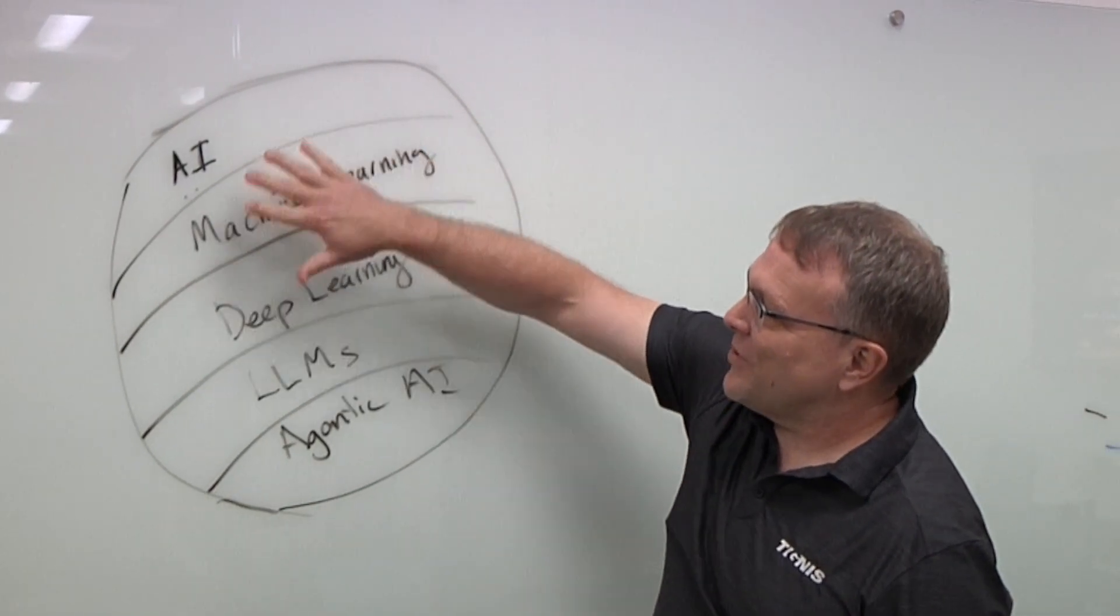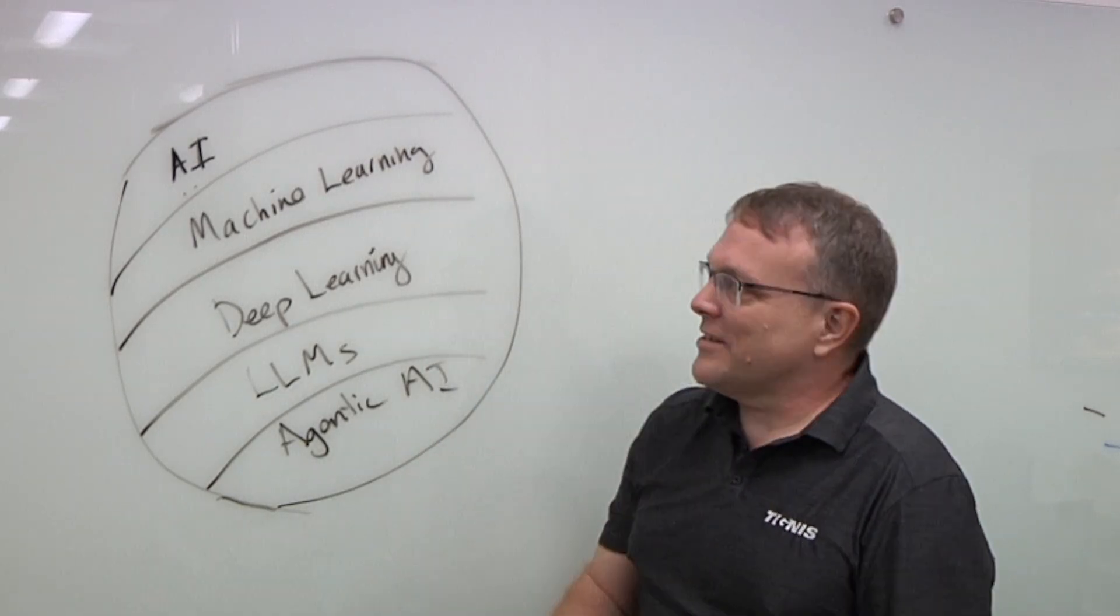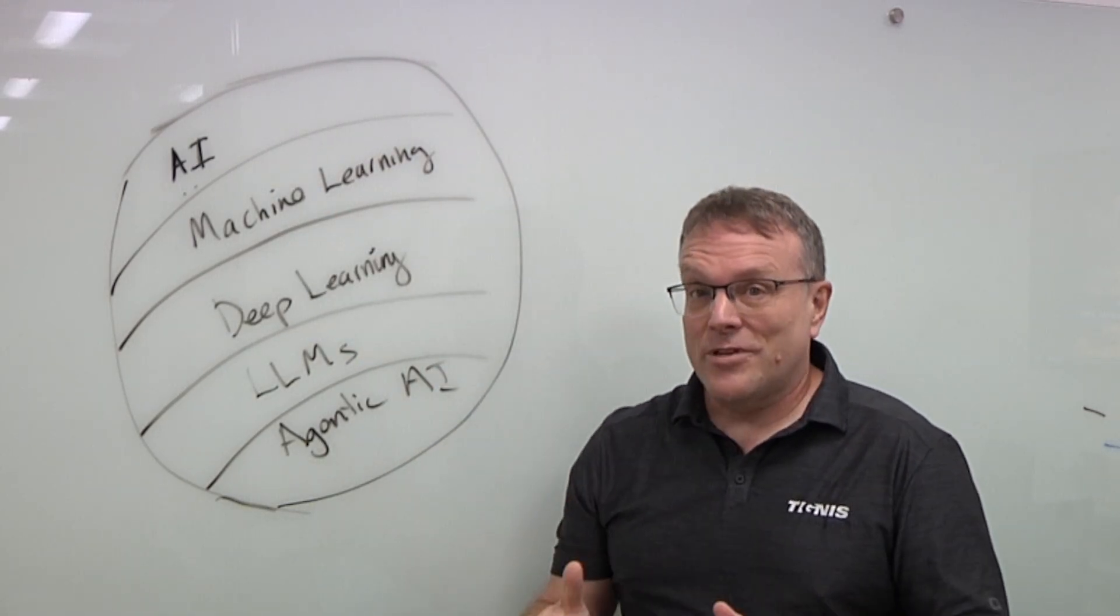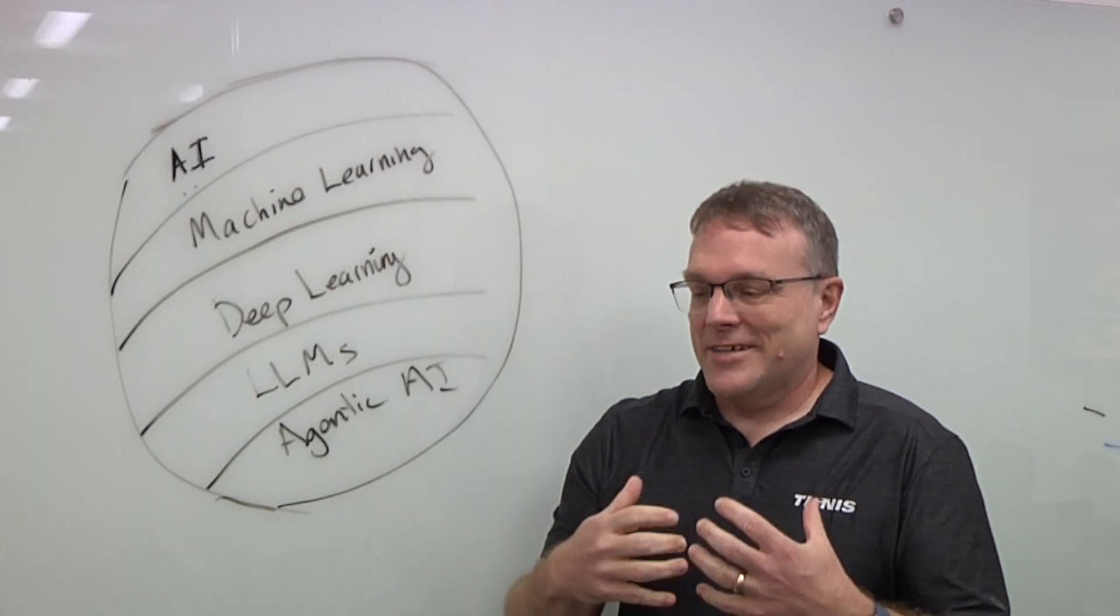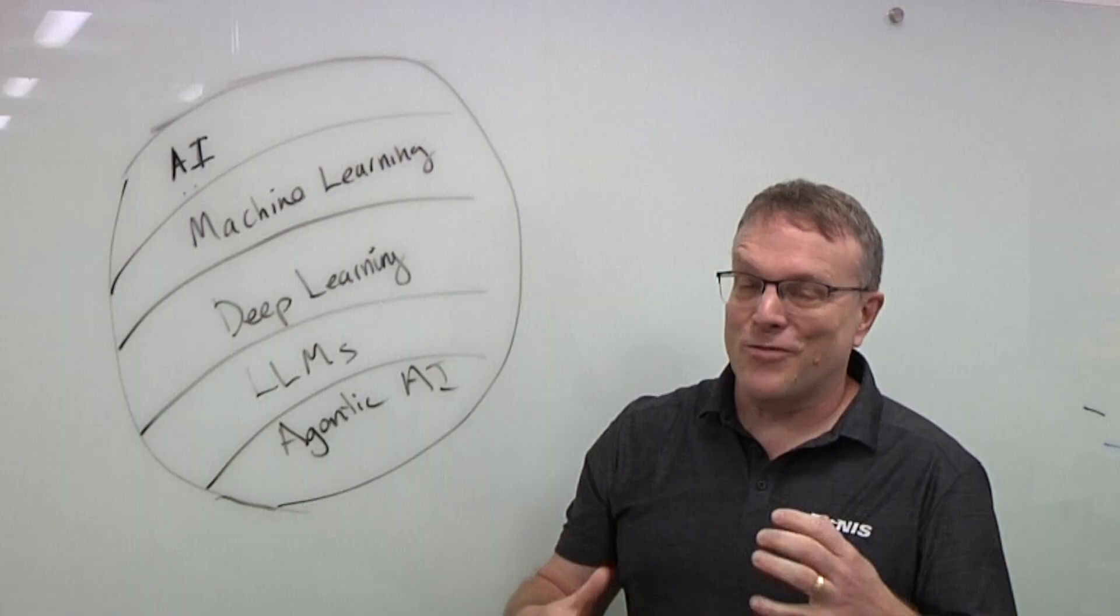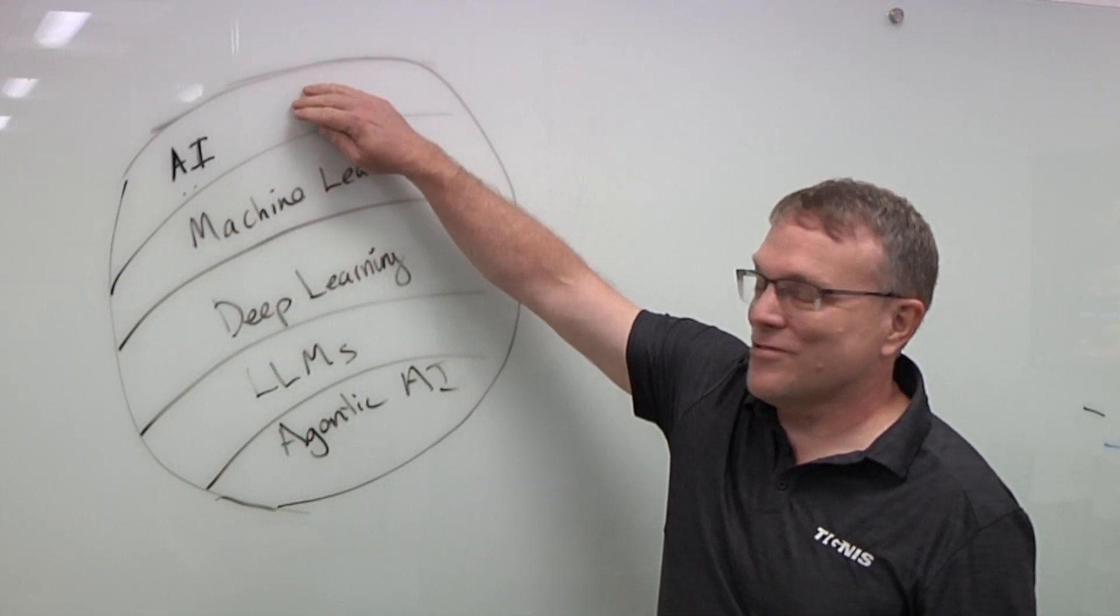So actually, the hardest one to define is really the top category. What is AI more broadly? One of my favorite definitions for AI is it's really things that previously could only be done by humans, right? It's sort of the best definition I've come up for. And it's almost something that changes over time.